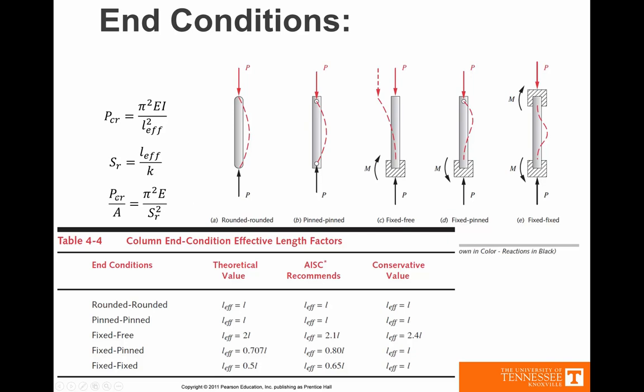And so that allows us, using table 4-4 in Pearson's book, to just read off what our effective lengths ought to be. Notice some differences here. We have a theoretical value. This is how we would expect things just looking at the differential equation.